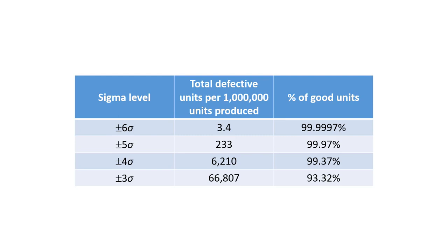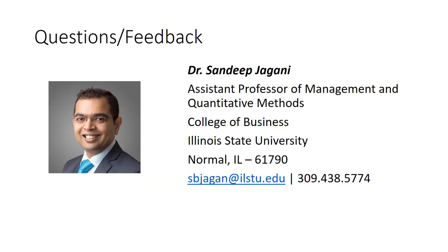We can summarize the results in this table. Statistically speaking, a six sigma process will have no more than 3.4 defects per one million opportunities. In case of any questions or concerns, please do not hesitate to contact me using the information on the screen, or write a comment in the comment section below the video. Thank you.